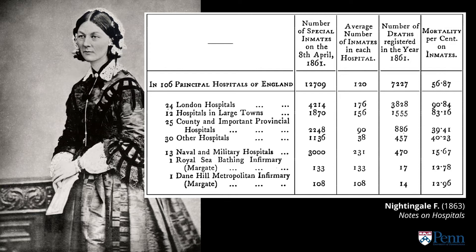...the first hospital report card goes all the way back to 1863, in notes on hospitals written by Florence Nightingale. What you see here is they look at the mortality percent of inmates — or those in the hospital. London hospitals have very high mortality, while hospitals in large towns are slightly lower, and county or provincial hospitals are the lowest at 39.41%. Finally, infirmaries, like the Royal Sea Bathing Infirmary, are down around 12%.